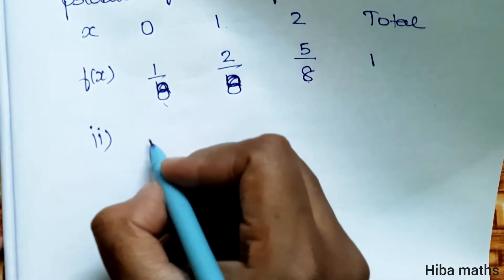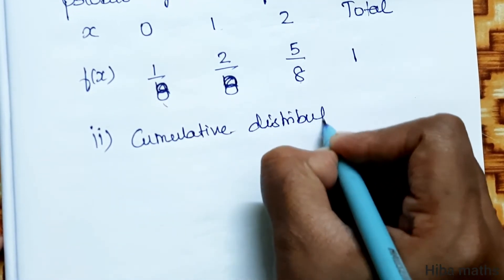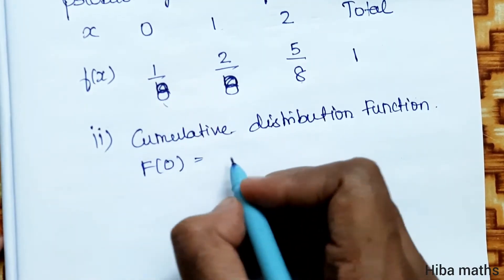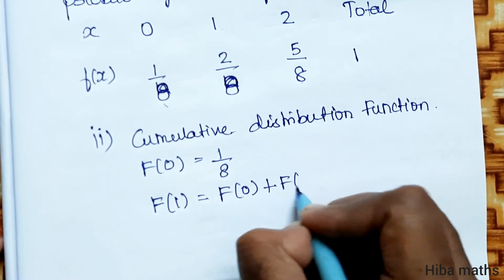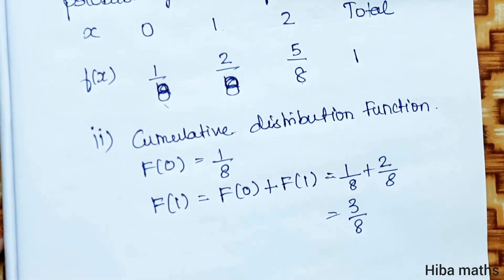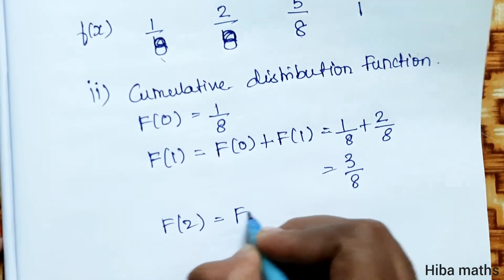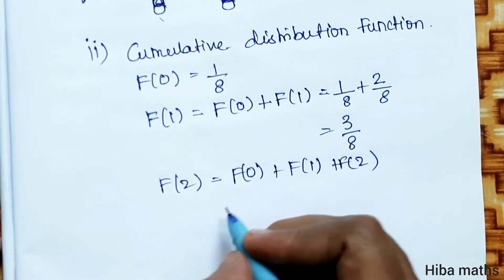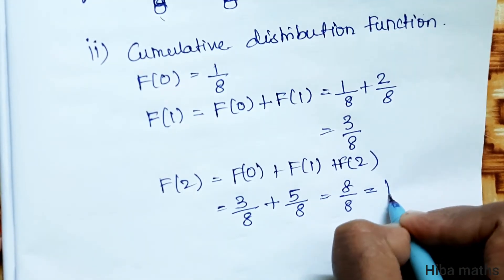Part ii: Cumulative distribution function. F(0) = f(0) = 1/8. F(1) = F(0) + f(1) = 1/8 + 2/8 = 3/8. F(2) = F(0) + f(1) + f(2) = 3/8 + 5/8 = 8/8 = 1.